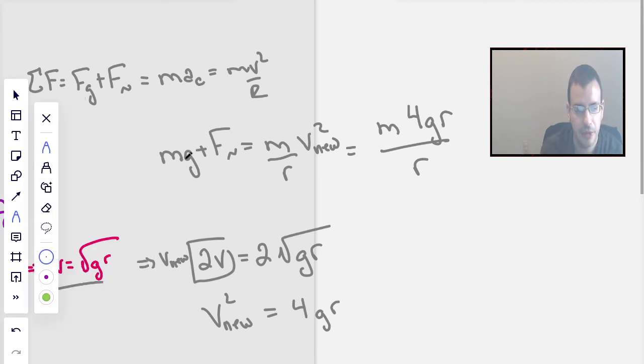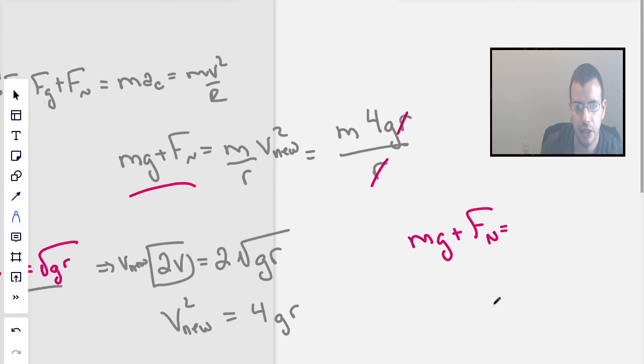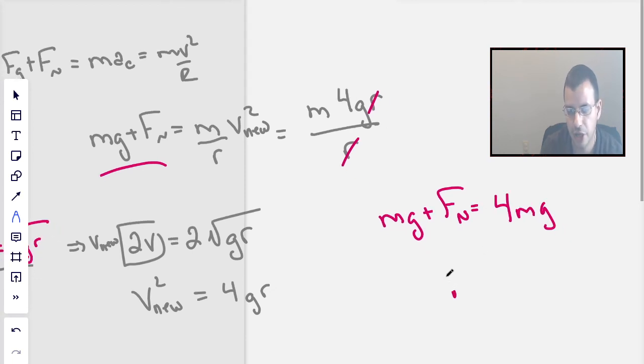So now we get the equation mass times gravity, which is force gravity, plus force normal, equals m4gr. r is canceled. Rewriting this, we get mass times gravity plus force normal equals 4 mass times gravity. Rearranging it, force normal equals 4 mass gravities minus 1 mass gravity, gives us 3 mass gravities.